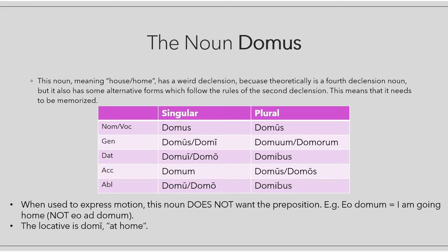A particular noun whose declension needs to be memorized is 'domus'. Domus means house, and if you have ever been to Italy, you know that many churches are called 'Duomo'. Duomo directly comes from domus, because that church is seen as the house of God. Domus has a mixed declension because theoretically it belongs to the fourth declension, but it also has some alternative forms which follow the rules of the second declension, and you have to be able to recognize both.